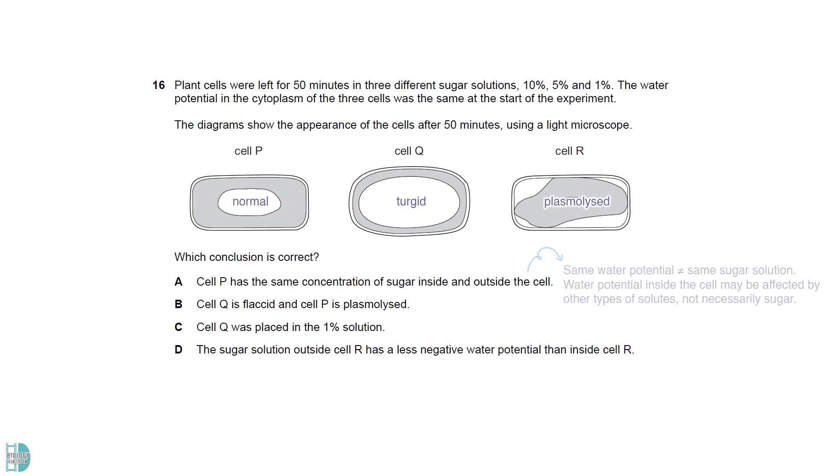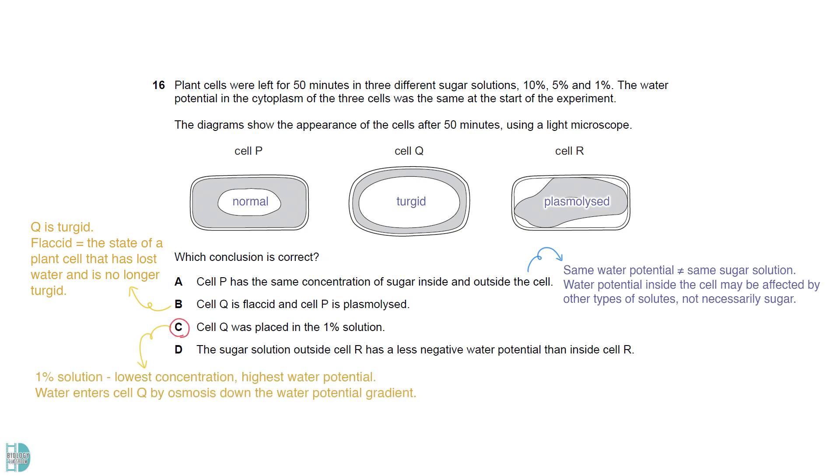The water potential of cell P's cytoplasm is the same as the sugar solution, but it does not mean that the sugar concentration is the same. It may be due to other types of solutes. So A is wrong. Flaccid refers to the state of a plant cell that has lost water and is no longer turgid. So B is incorrect. The 1% solution has the lowest concentration and highest water potential. Water enters the cell by osmosis down the water potential gradient. It is correct. D is wrong because the solution outside should have a more negative water potential for water to move out from the cell by osmosis.